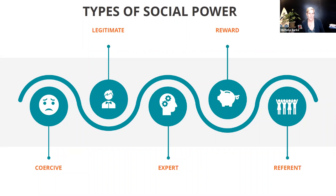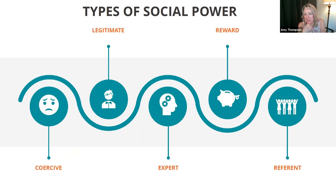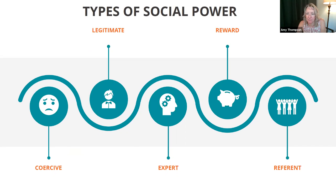First thing — coercive. Go ahead and type in the chat what you think that means. What does coercive mean to you? These are the different types of social power that exist and how we can influence behavior. Someone being like a dictator — yeah. Convincing someone to put their needs last. Bullying — yeah, that's good. So coercive is generally used in a bad sense. We've got manipulation, threatening, coercive leader, someone who abuses leadership power. Those are all really good.